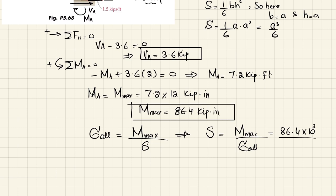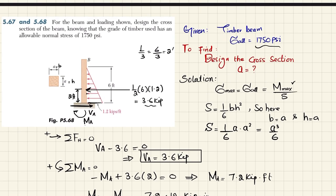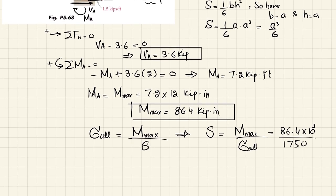Pound-inches it will be, pound-inches, divided by allowable stress which is 1750, I think 1750. So again when you solve this you will get section modulus will be equal to 49.37 cubic inches.